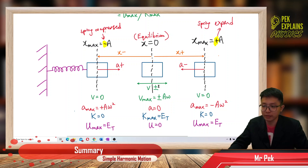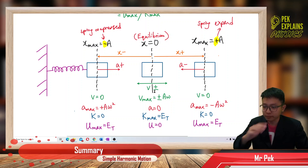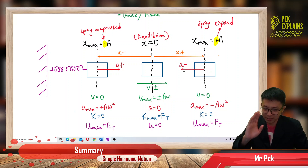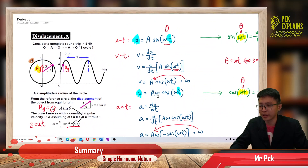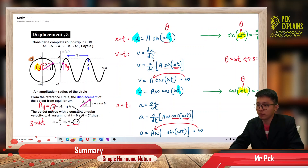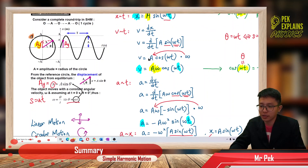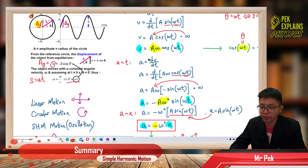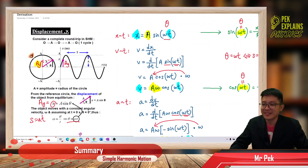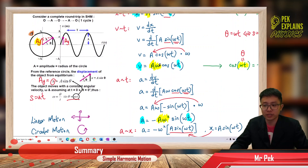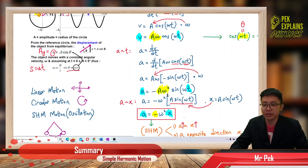Velocity is zero at the amplitude because the object stops temporarily to change direction. Velocity is maximum at the center. The maximum displacement is amplitude A, maximum velocity is Aω, and maximum acceleration is Aω².